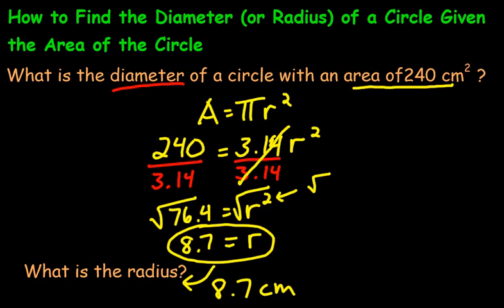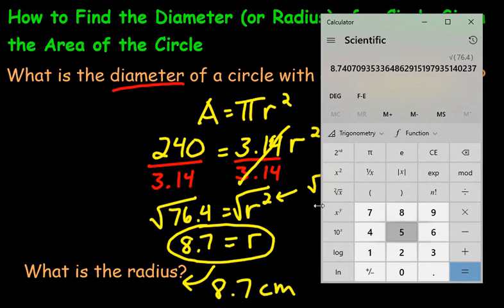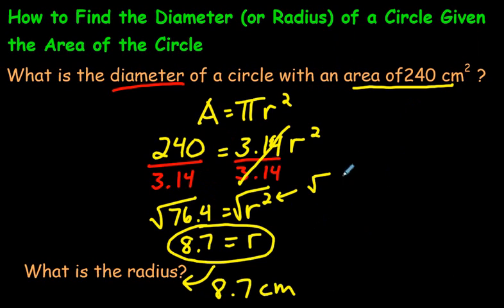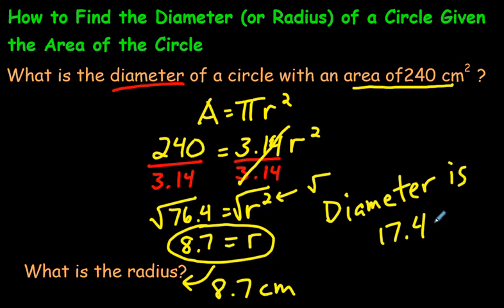So if you know the radius, all you have to do is take your answer, 8.7, and the more decimals you use, the better, but I'm just going to go 8.7 times 2, and it's 17.4. So the diameter of this is 17.4 centimeters, which is double the radius right there.